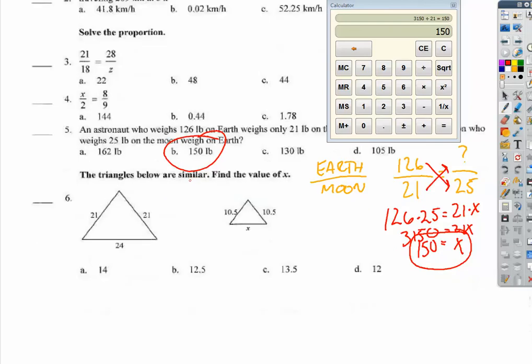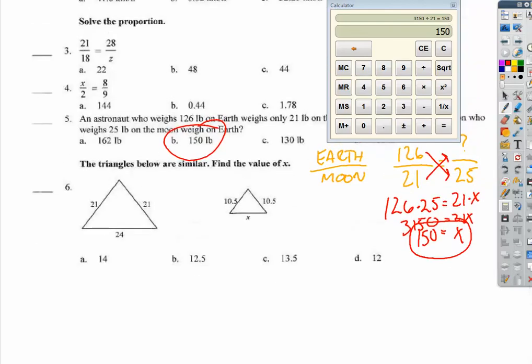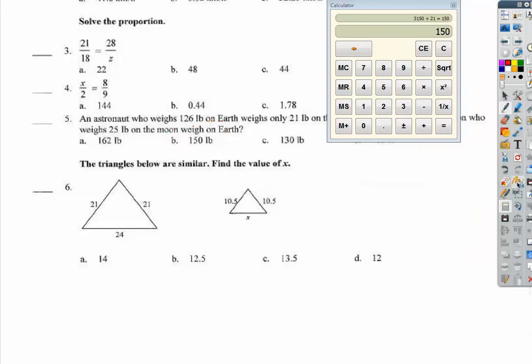Question 6. The triangles below are similar. Find the value of x. The scale factor to go from here to here is going to be 2. Because 2 times 10 is 21. So, going the other way, the scale factor is going to be the reciprocal, which is 1 half. So, what is half of 24? 12.